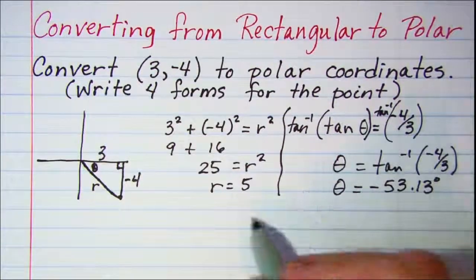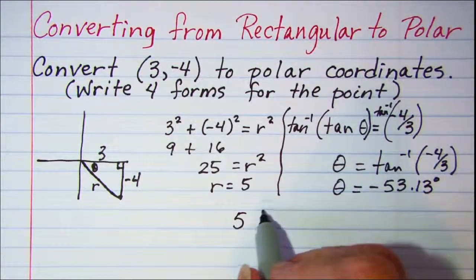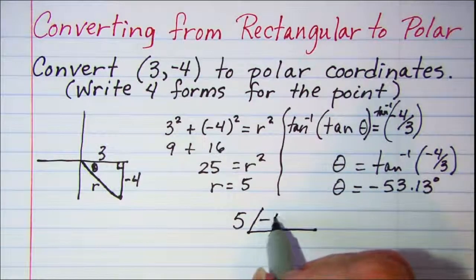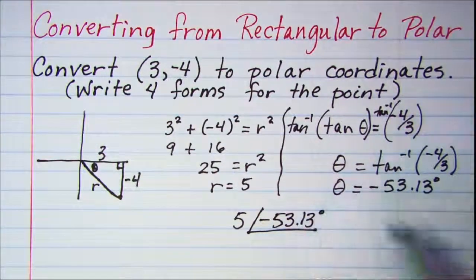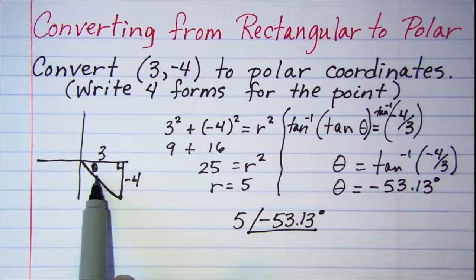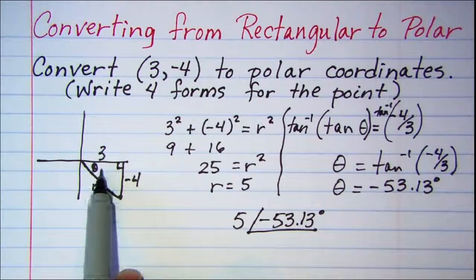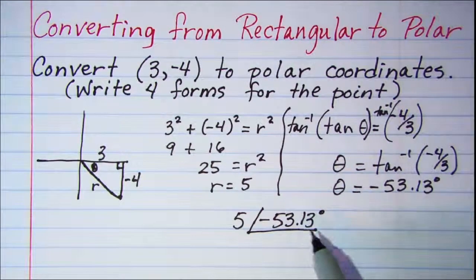So one of our forms is r = 5 and θ = -53.13°. This makes sense because this is moving clockwise from the positive x-axis, so a negative 53° does make sense. That's one of our answers.